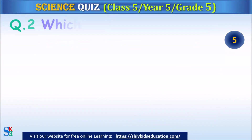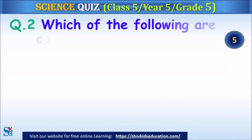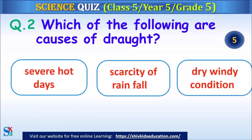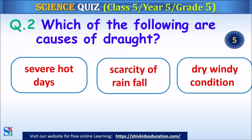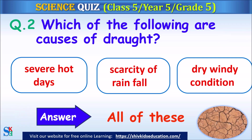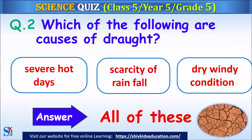Question 2: Which of the following are causes of drought? Severe hot days, scarcity of rainfall, or dry windy condition? The answer is all of these.